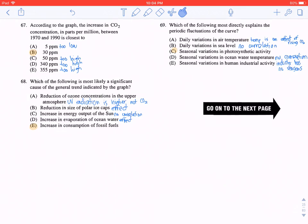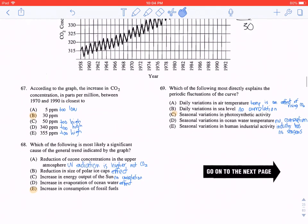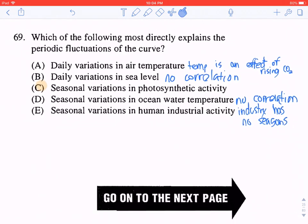And it wouldn't be D, because increase in evaporation of ocean water is an effect of increased CO2. So the correct answer is E, increase in consumption of fossil fuels, since fossil fuels release CO2 when they are burned.